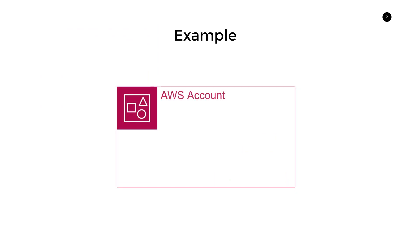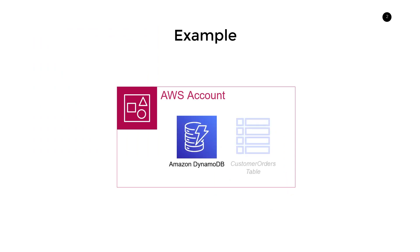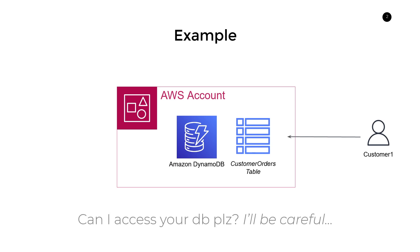Let's jump right into it with a practical example. Let's say we have an AWS account with an Amazon DynamoDB table — our customer orders table. Now let's assume someone comes along, maybe a particular customer or developer, and they ask for access to your DynamoDB table, assuring you they'll be very careful with it. In a lot of applications, you don't want to give free-reign access because it may contain sensitive data or attributes that this user or developer should not be able to see.